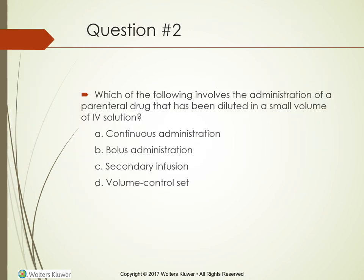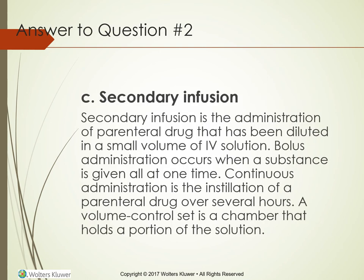Which of the following involves the administration of a parenteral drug that has been diluted in a small volume of IV solution? Continuous administration, bolus administration, secondary infusion, or volume control set? Your answer should be secondary infusion. This is the administration of a parenteral drug diluted in a small volume of IV solution. Bolus administration occurs when a substance is given all at one time. Continuous administration is the installation of a parenteral drug over several hours. A volume control set is a chamber that holds a portion of the solution.